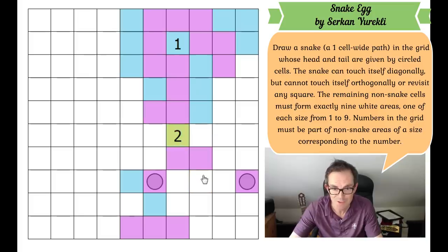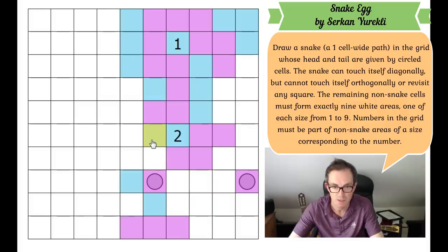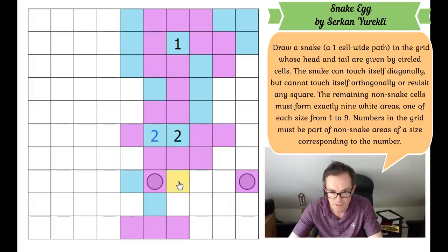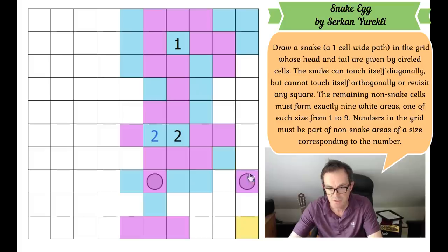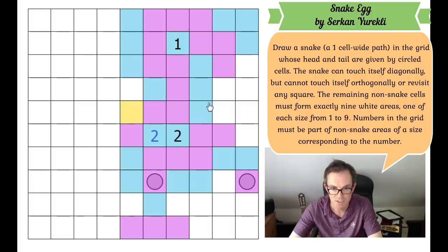The blues can't connect to the two otherwise it would be a five-cell region, so the snake here makes this blue. This has got to be a two-cell region. This is now isolated — that's got to be blue, this has got to be blue. The head or tail can't go upwards anymore because it would end very quickly. So that's blue, this is blue, this is purple, this is blue, this is blue.